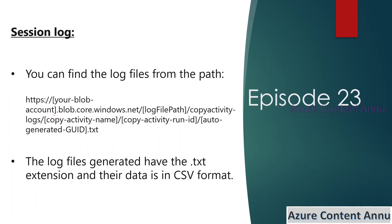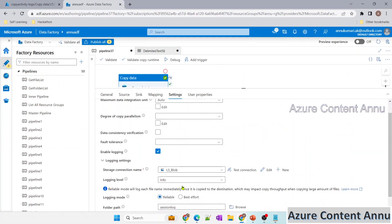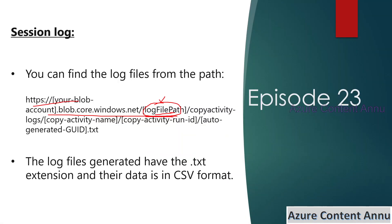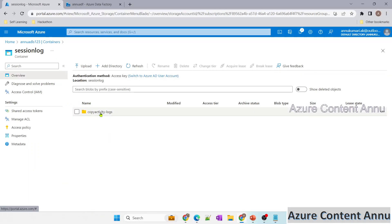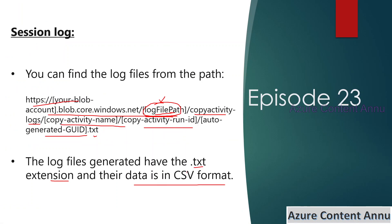You can find your session logging file under a specific path: the endpoint for your blob storage followed by the log file path set in the copy activity configuration. In our case, we gave the folder path name as session log. ADF by default creates a subfolder called copy activity logs, and under that it creates the copy activity run ID, then an auto-generated GUID, and then the file in .txt extension. The data inside the file is in CSV format.